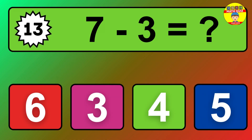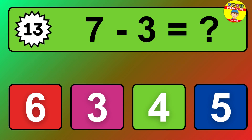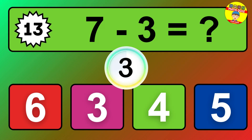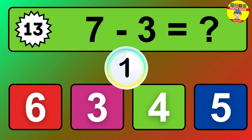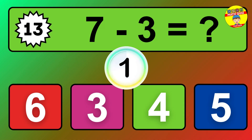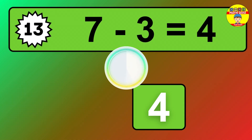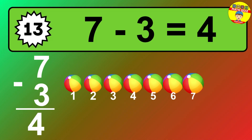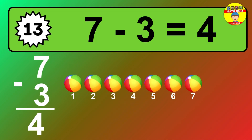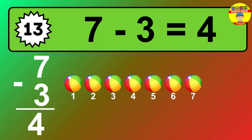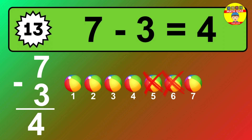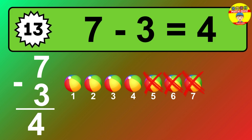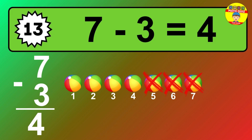Question thirteen: seven minus three equals what? So the answer is seven minus three is four. Let's count it: one, two, three, four.